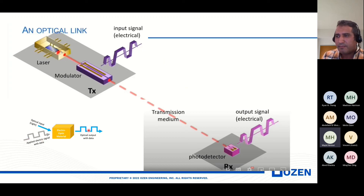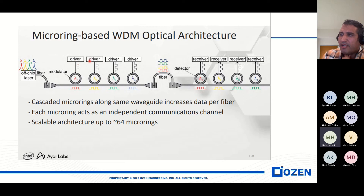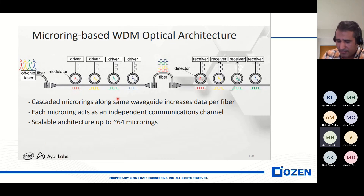In this picture, we can see different wavelengths with four modulators: lambda 1, lambda 2, lambda 3, and lambda 4. Drivers create electrical signals, and these modulators convert the electrical signal to the optical signal. We also have some detectors here. This is the structural air lab.